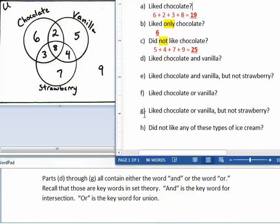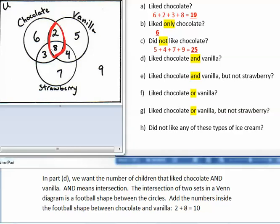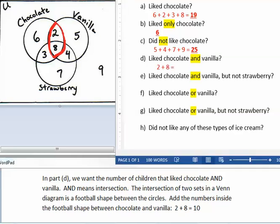Parts D through G all contain either the word AND or the word OR. Recall that those are key words in set theory. In part D, we want the number of children that liked chocolate and vanilla. AND means intersection. The intersection of two sets in a Venn diagram is a football shape between the circles. Add the numbers inside the football shape between chocolate and vanilla. 2 plus 8, which equals 10.